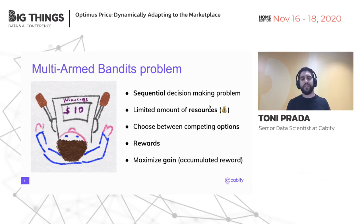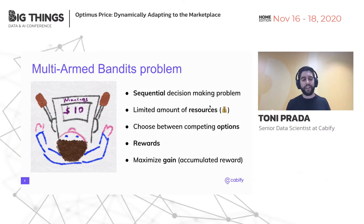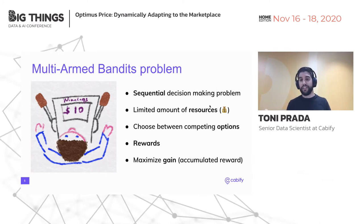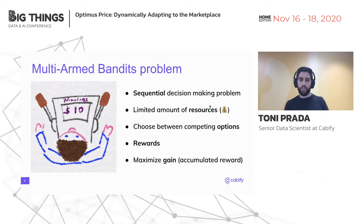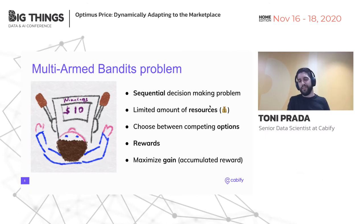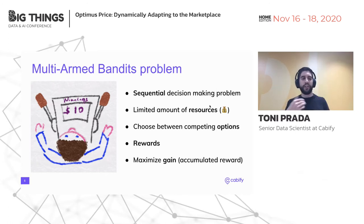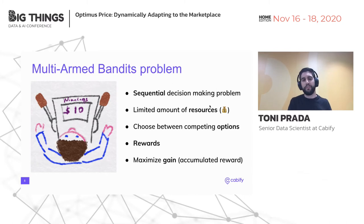This field was not created to play with slot machines but for a more worthy case. It was introduced by Thompson in 1933 to reduce cruelty in clinical trials. Imagine you want to run a clinical trial with a drug you think will help sick people. You randomly divide patients between treatment — who get the drug — and control — who get a placebo. What Thompson proposed was that as the experiment advances and you gain more knowledge about whether the drug is working, you can adapt the allocation, putting fewer people into the placebo and more into the actual drug.